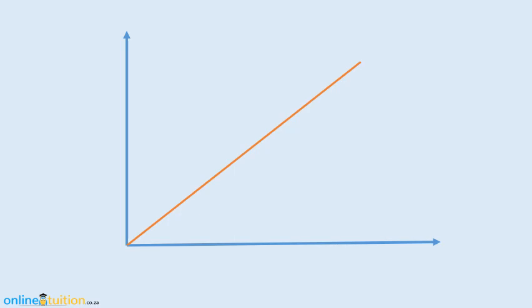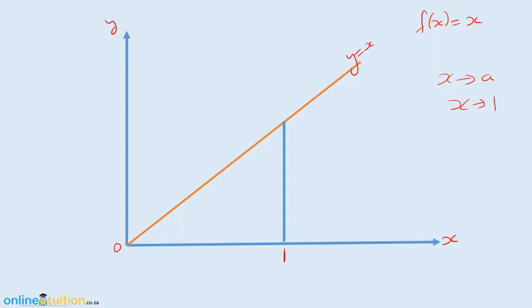We have a graph of y equal to x — really nothing more than f of x equals x. That's the y-axis, that's my origin, and there's the x-axis. I want to understand what we mean by x approaching a, and in this case, x approaching a simple number: 1. If x equals 1, then from my function f of 1 equals 1, so the y value is 1.